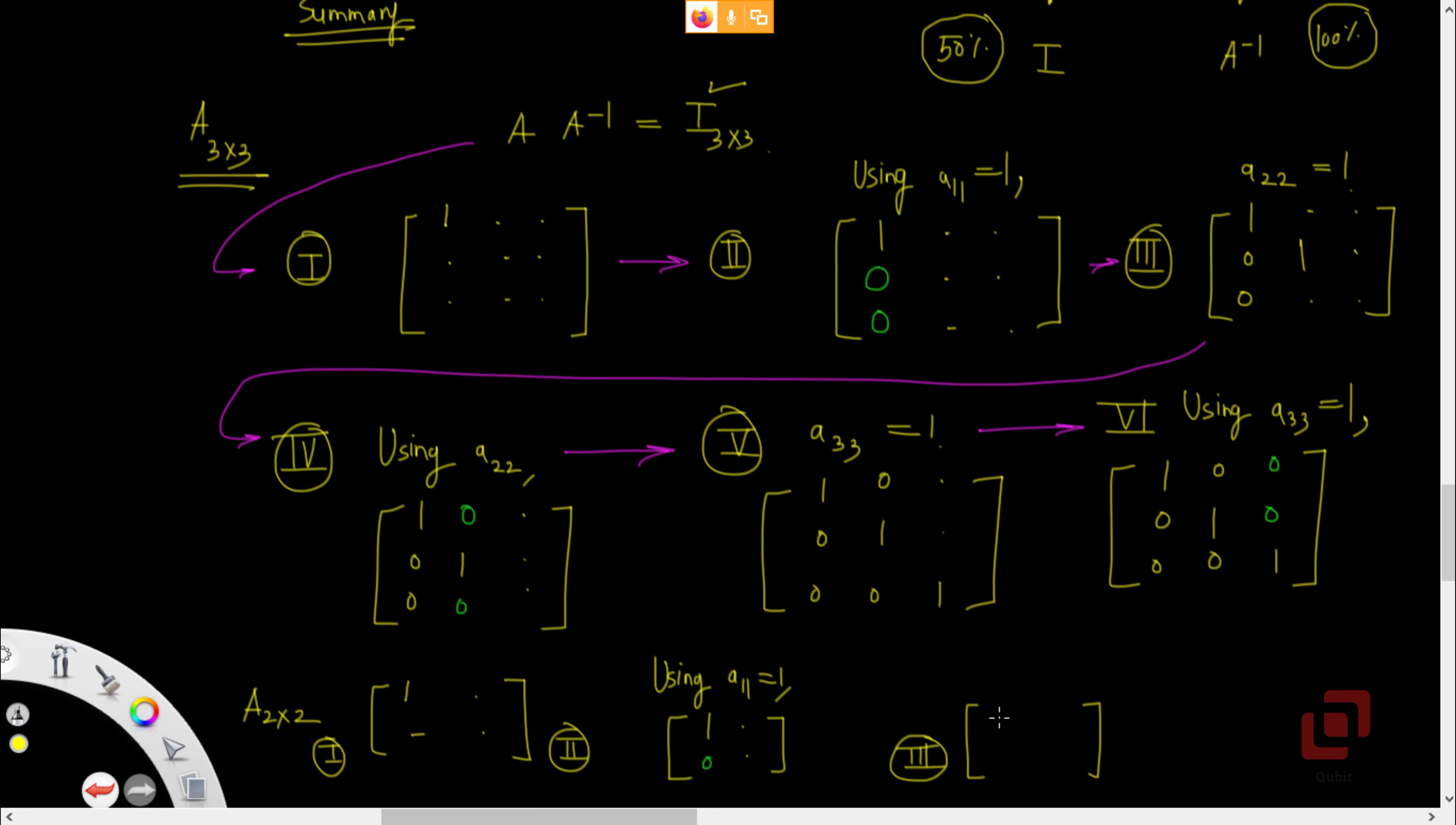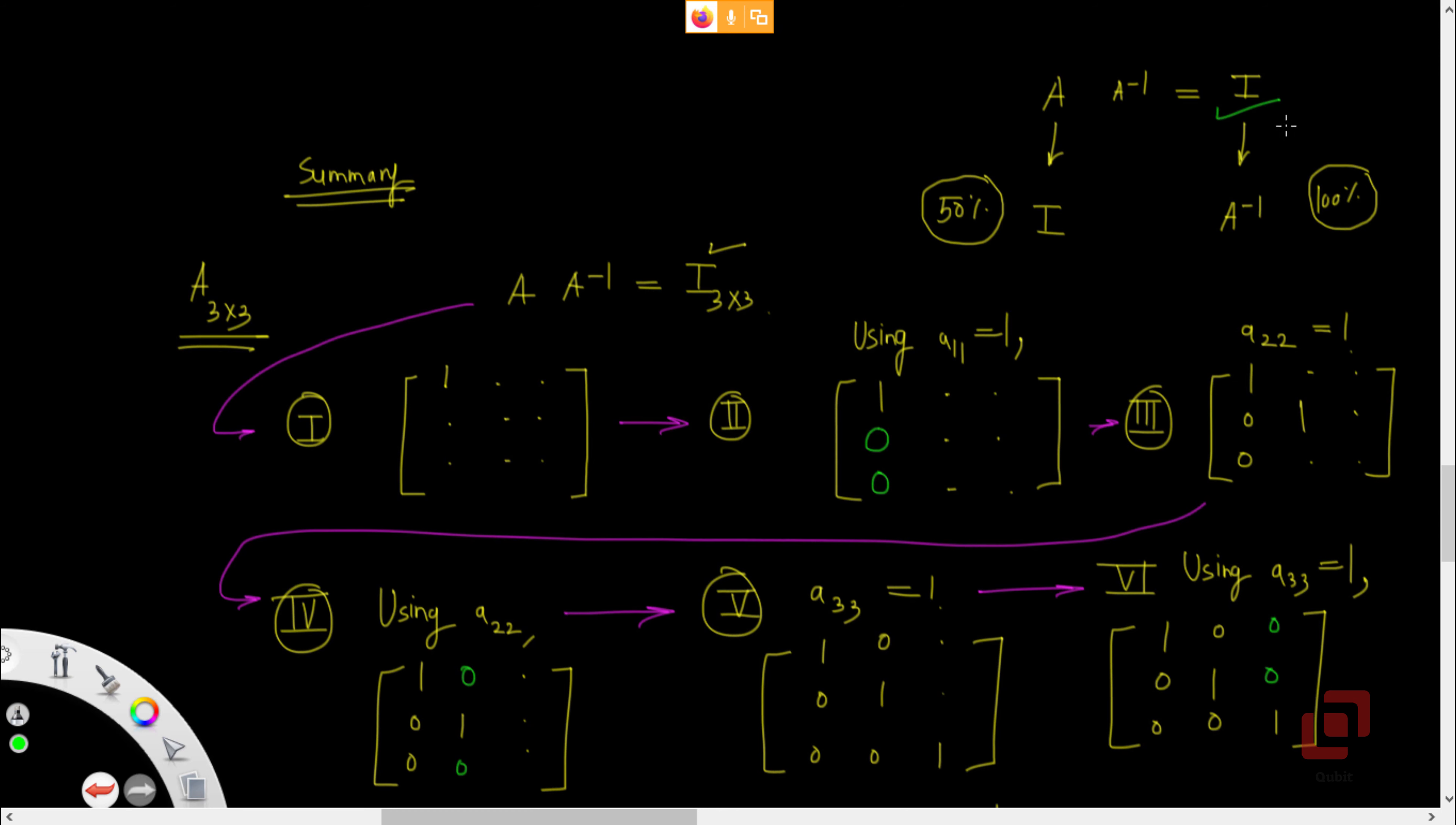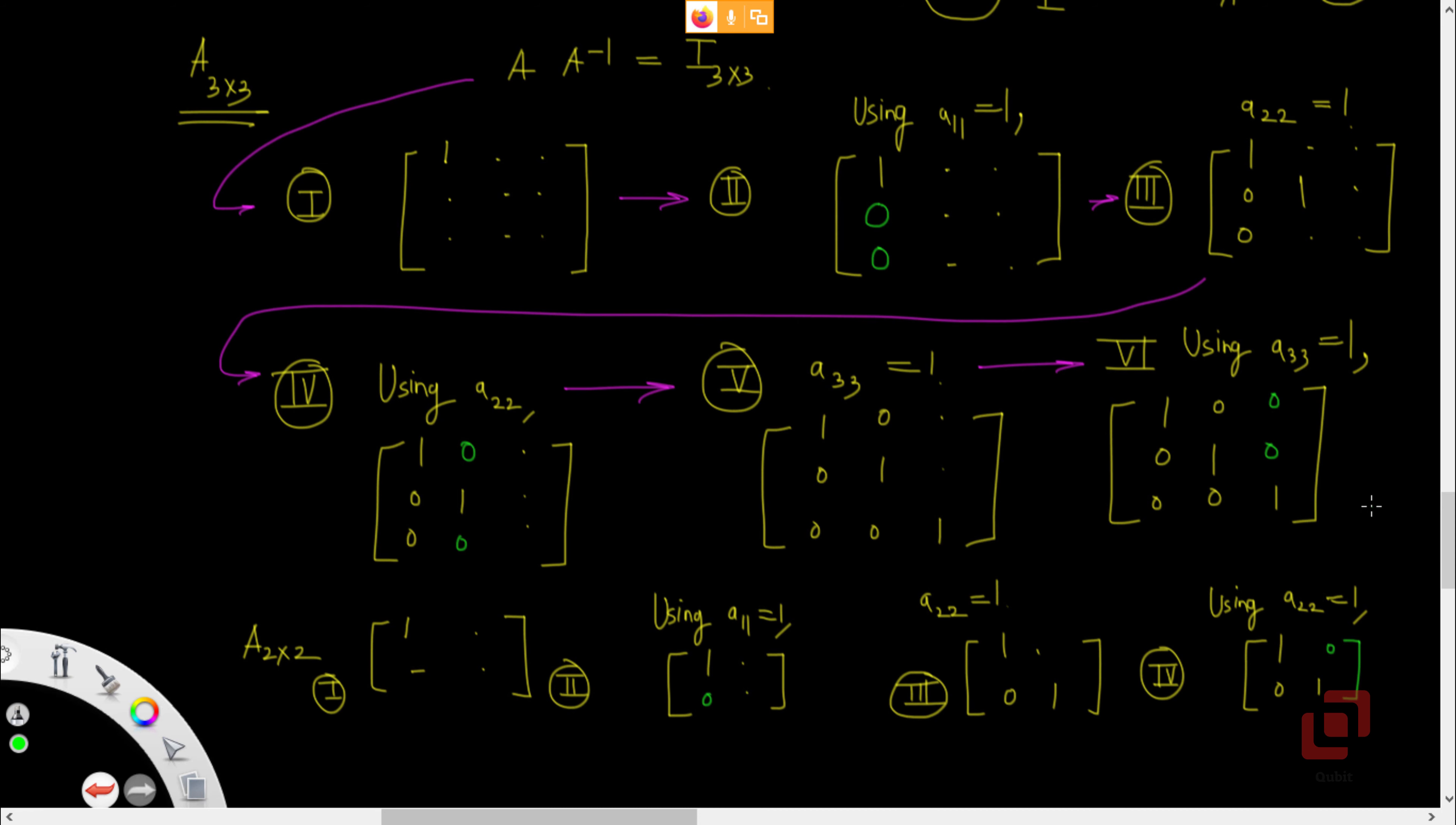Step 4. Using A22 equal to 1, convert this entry to 0. And again, perform the same operations in the same sequence on the matrix on the right-hand side. That should give you the inverse by row transformations.